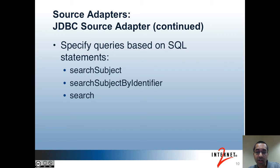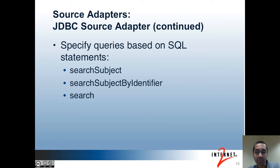There are methods in the Subject API that allow all of these different types of searches to happen. These queries are assumed to return different columns for each of the attributes associated with the subject source — for instance, there would be a name, an ID, and a description column, but there may be other columns for other attributes as well. Grouper comes with an example subject source using this adapter. This source includes two tables in the Grouper registry, which are the subject and the subject attribute tables. You can look at this example as a starting point if you use this adapter.